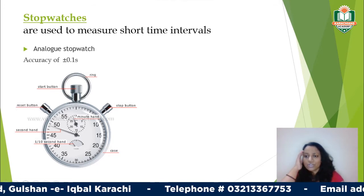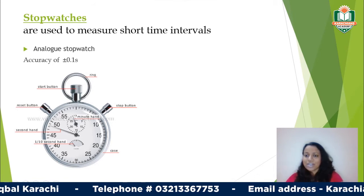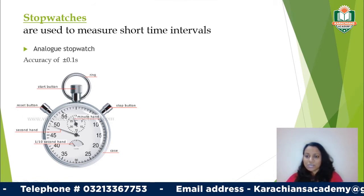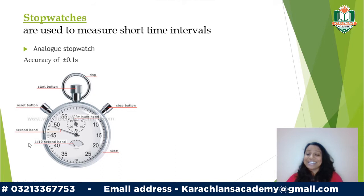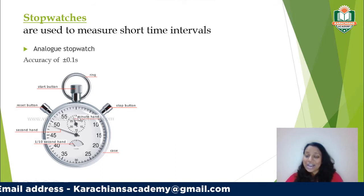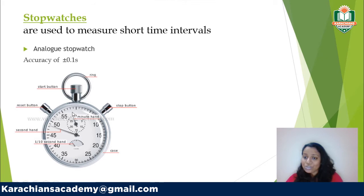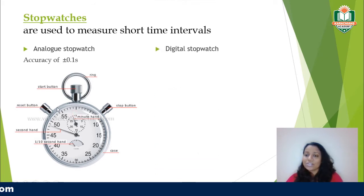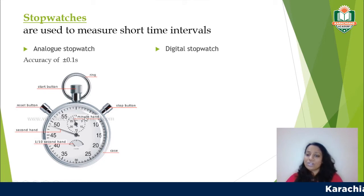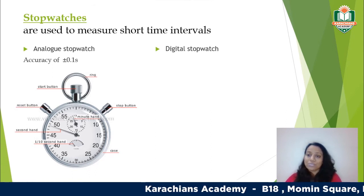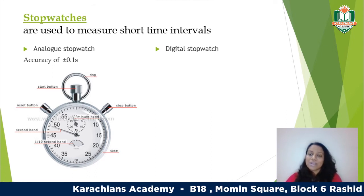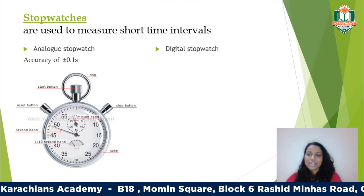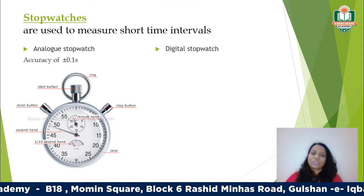On the analog stopwatch, the outer hand is the seconds hand — there are 60 seconds in a minute. The smaller inner hand counts the minutes: when the big hand completes one full rotation, the minute hand moves once. The accuracy of an analog stopwatch is ±0.1 second, meaning the minimum readable interval is 0.1 second.